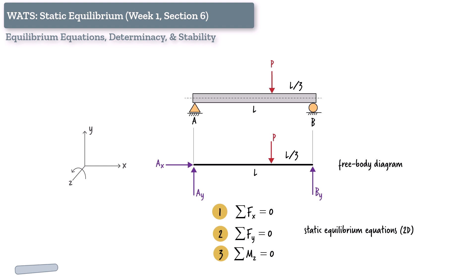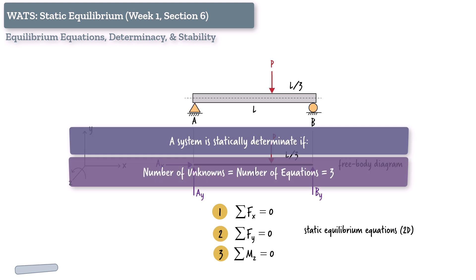Since we have three equations, we can solve for up to three unknowns. Now here's something really important. When the number of unknowns equals the number of available equations, three and three, we say the system is statically determinate. That means, at least in theory, we can solve the equations to find the unknowns.